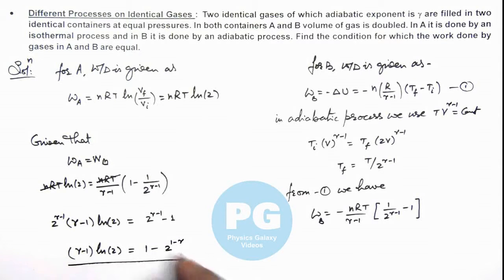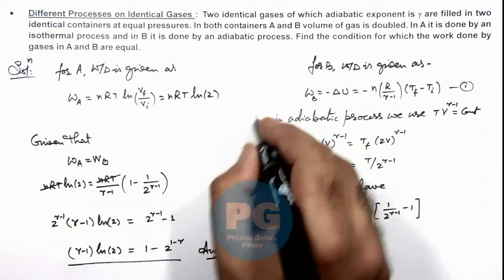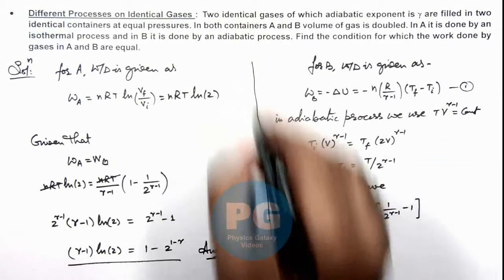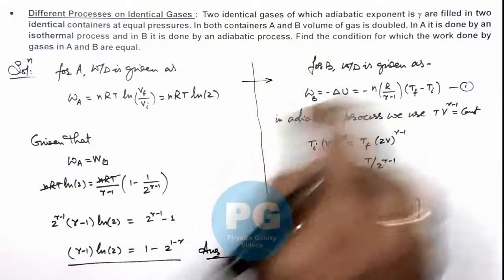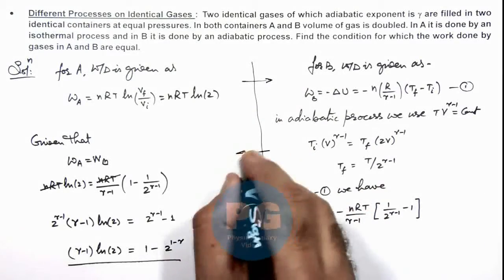So this is the condition for which the work done by the two gases in containers will be the same. That is the result of this problem. And this section here we can isolate, so from here we are solving the process and then we are coming back here.